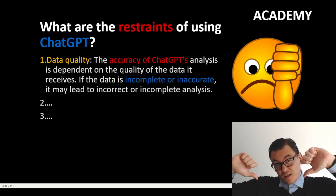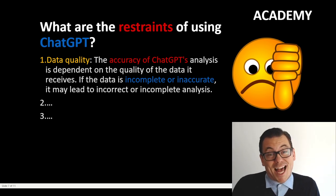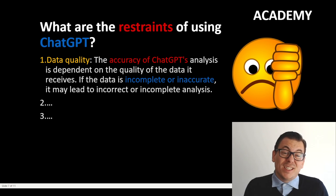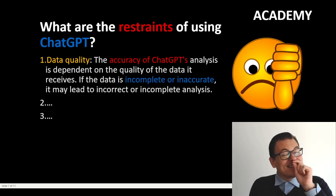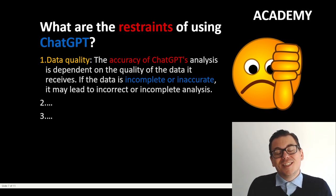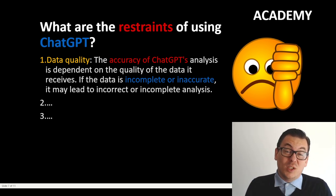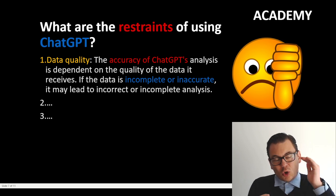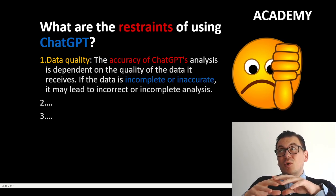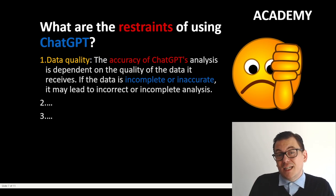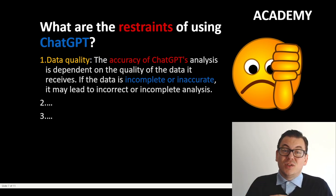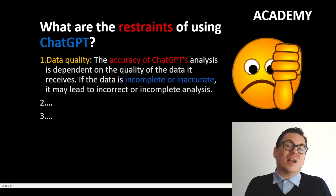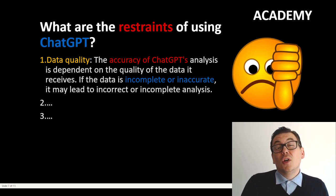Now let's look at the downsides of ChatGPT and other large language models. The first restraint is data quality. ChatGPT itself states that its accuracy is limited — the data is currently constrained to 2021, so it may be incomplete or inaccurate. You should always check the validity of the data by asking for hyperlinks, and you also need confirmation and verification of your information before using it in your risk assessment.